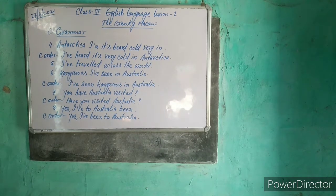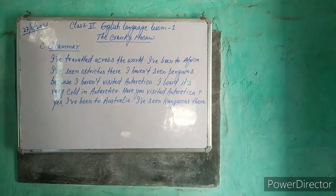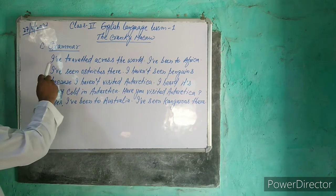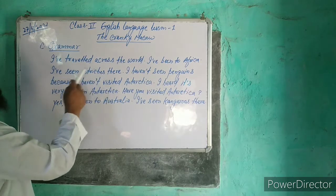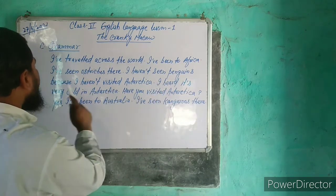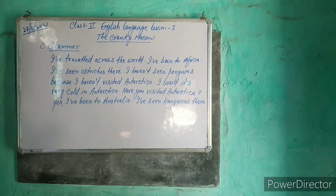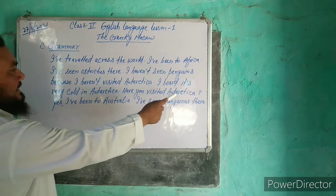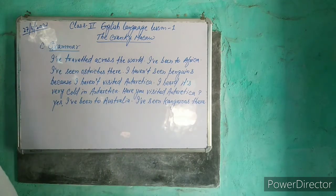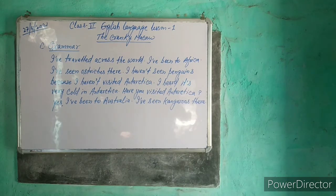Now we will make a story from these sentences. From the above sentences we get this story. It is a conversational story — someone is telling that I have traveled across the world, I've been to Africa, I've seen ostriches there, I have not seen penguins because I haven't visited Antarctica, and I heard it's very cold there. Then the listener asks: Have you visited Australia? The narrator replies: Yes, I've been to Australia, I've seen kangaroos there. That's all in this video. Thank you for watching. We will meet in the next class to solve C2. Goodbye.